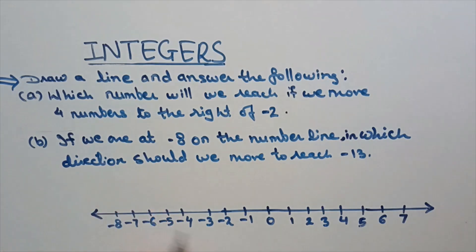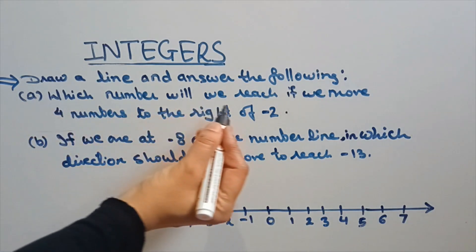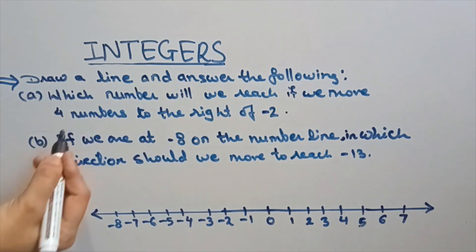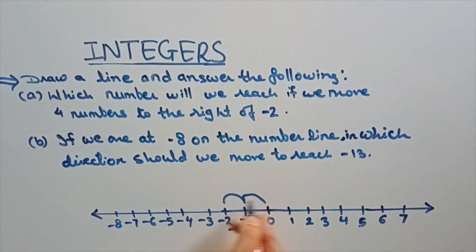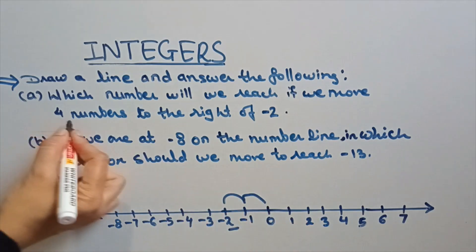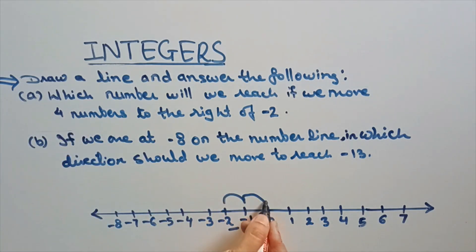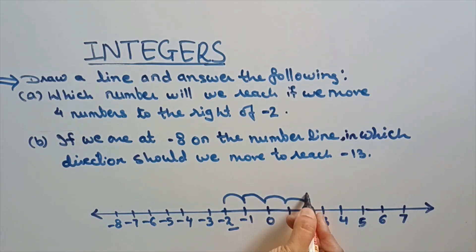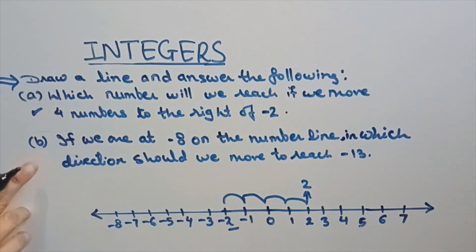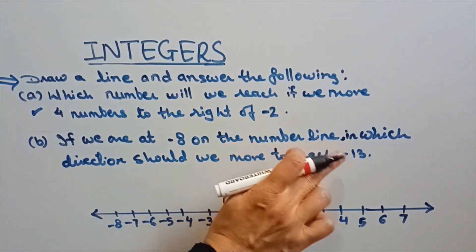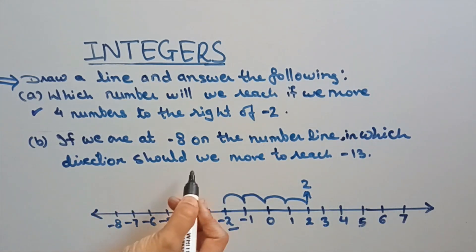Suppose we have to represent numbers on the number line. Which number will we reach if we move 4 numbers to the right of minus 2? Minus 2 is here — to the right of minus 2, we move 4 steps: 1, 2, 3, and 4. So you will reach at 2.